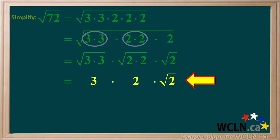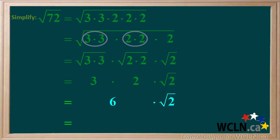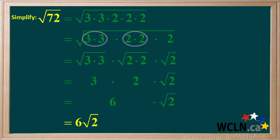So we're left with 3 times 2 times the square root of 2. 3 times 2 is equal to 6, and we'll bring down the square root of 2, leaving us with 6 times the square root of 2. We'll write it more compactly as 6 root 2. In summary, the square root of 72 can be simplified to 6 root 2.